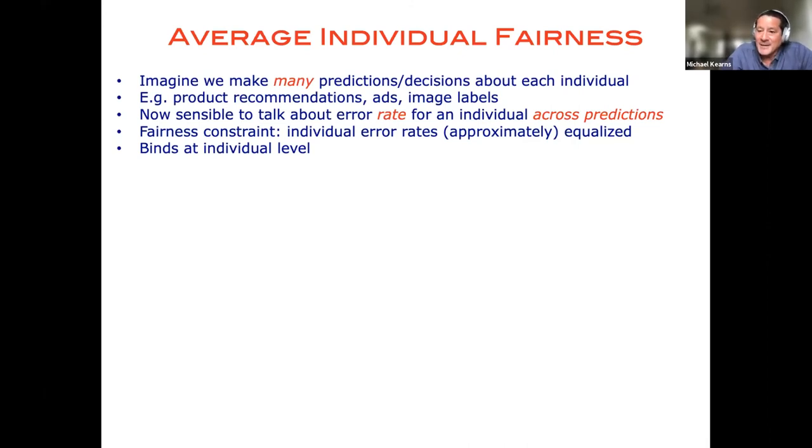And so now we can basically ask for individual fairness, but in this amortized way. I'm basically going to say, look, Dirk and Sergio, I do not promise that I'm going to equalize how you're treated on any one of these product recommendations. But I'm going to make sure that the error rate that my model gives for Dirk and for Sergio across many products is roughly the same. And so now I have something that binds at the individual level, but I can still talk about rates across different predictions that I'm making about you.